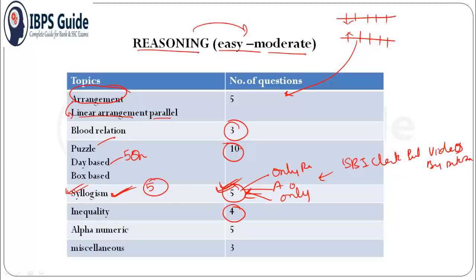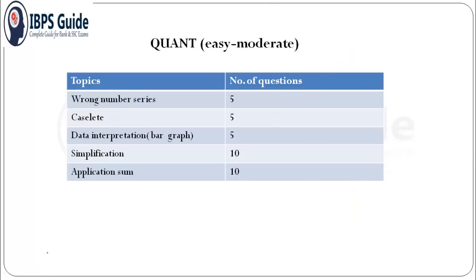Inequality was asked, total four questions. Alphanumeric five questions, and miscellaneous contained three questions. So reasoning was of easy to moderate level. One can easily score 25 to 30 with good practice. Let's move ahead.